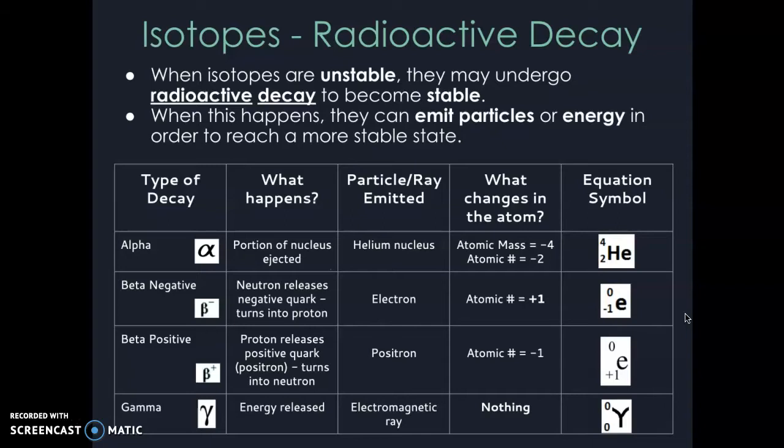Alpha decay is two protons and two neutrons stuck together that ejects from a radioactive isotope. In a decay equation, we identify it as helium because that's essentially what it is—a particle with four total mass, and two of those are protons.